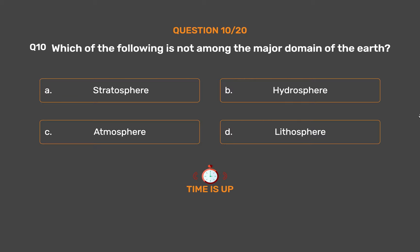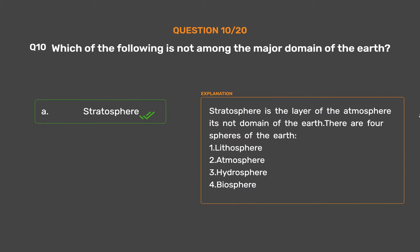The correct answer is Option A: Stratosphere. Stratosphere is a layer of the atmosphere — it is not a domain of the Earth. There are four spheres of the Earth: 1. Lithosphere, 2. Atmosphere, 3. Hydrosphere, 4. Biosphere.